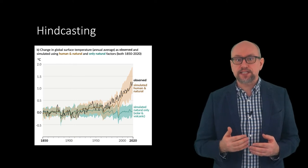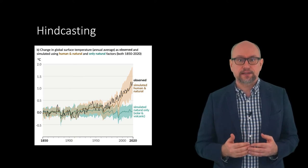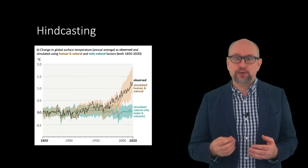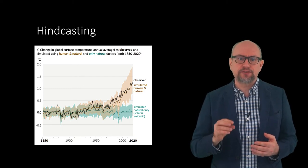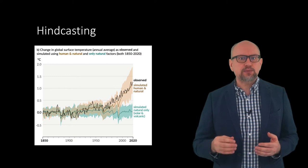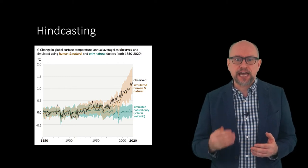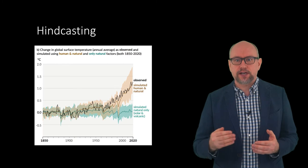Reproducing past observations is known as hindcasting. It is important that the model isn't tuned to reproduce past observations, because this would greatly limit the confidence we could have in any such model for forecasting the future.